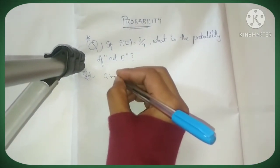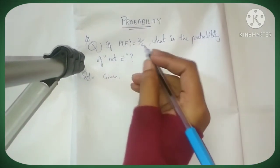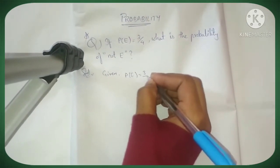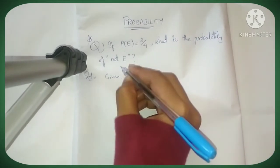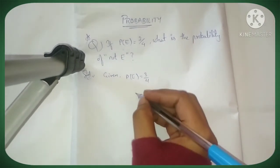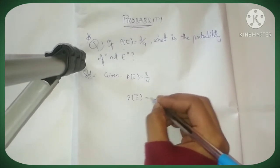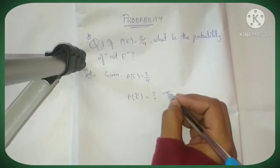We will write 'Given': probability of event P(E) is given as 3/4. What is the probability of not E? Not E means probability of not E, which we have to find.